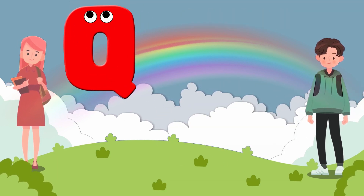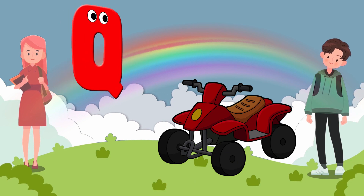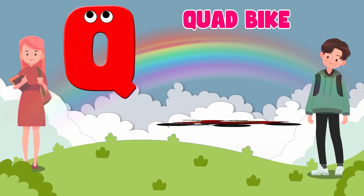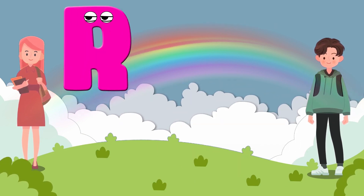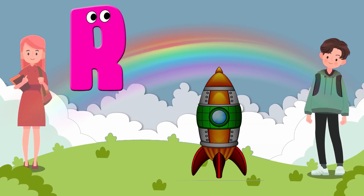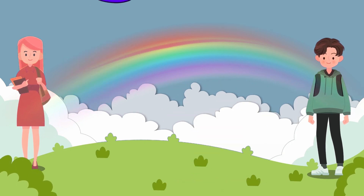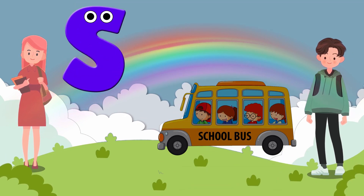Q is for Quad Bike. Q, Q. Quad Bike. R is for Rocket. R, R. Rocket.